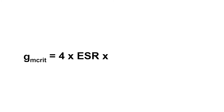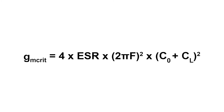When considering oscillation startup, the choice of crystal parameters is important. Lowering the SR frequency, C0 and CL will reduce GM CRIT and will maximize the gain margin.